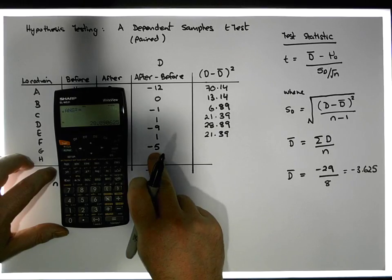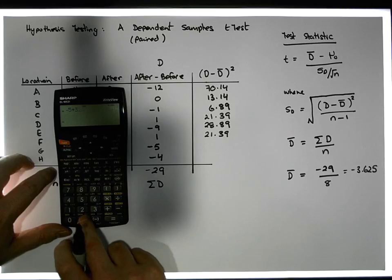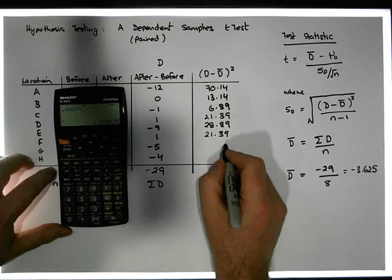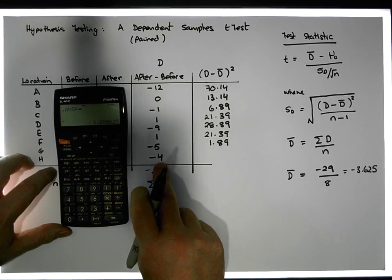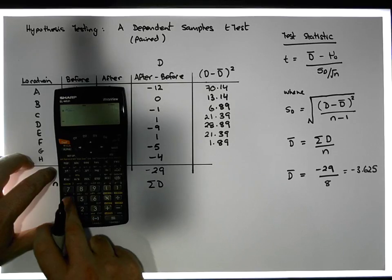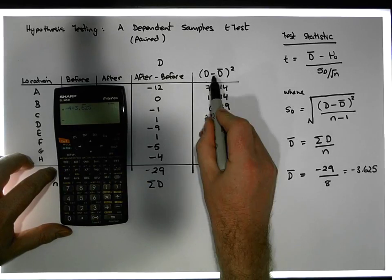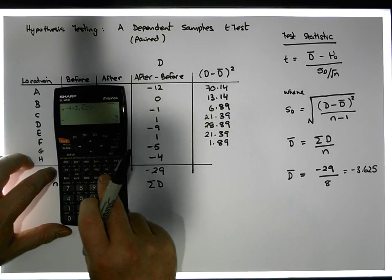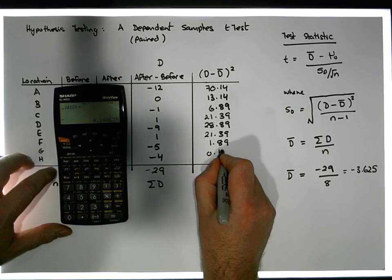Then we have minus 5. Minus 5 plus 3.625 gives us a value that, when squared, gives us 1.89. And finally, we have minus 4 plus 3.625 — the plus is because it's a minus times the minus average. When we square that, we get a value of 0.14.